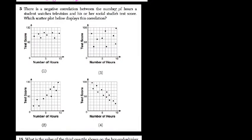There's a negative correlation between the number of hours that a student watches TV and their social studies test scores. Which scatterplot displays this correlation?